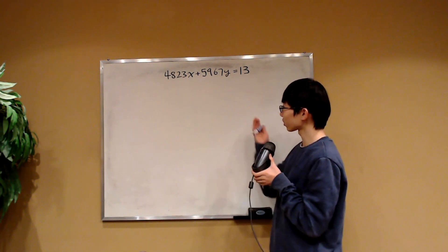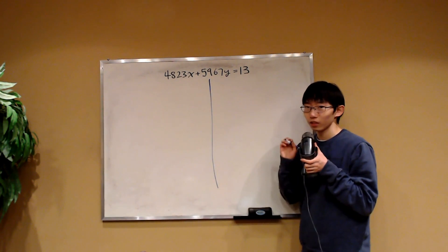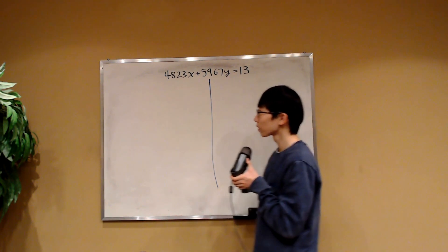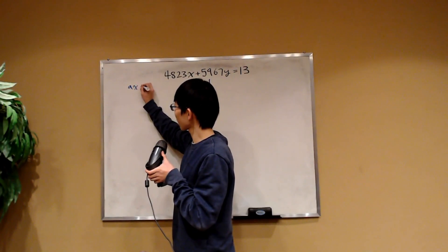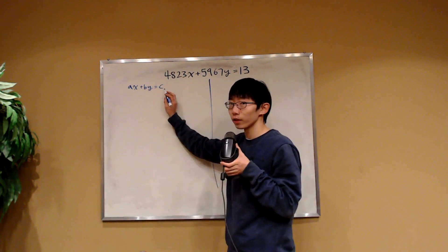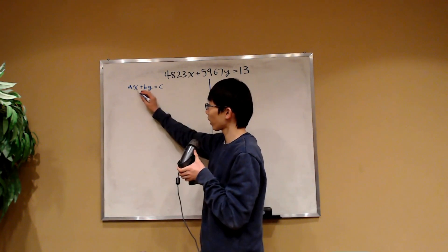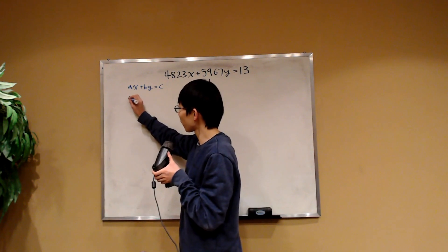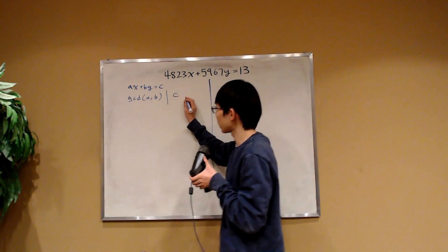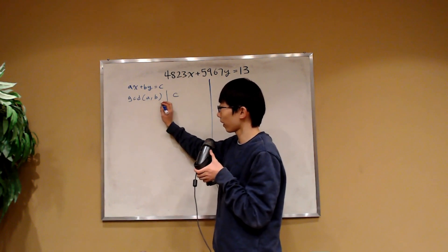To solve this, I will divide the board into two halves. First, I want to go over something about linear Diophantine equations. If we have a linear Diophantine equation ax + by = c, where a, b, and c are known integers, then there exists an integer solution for x and y if and only if the greatest common factor of a and b fully divides c.